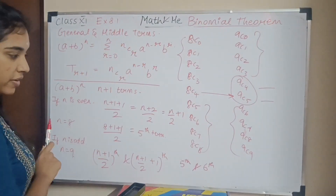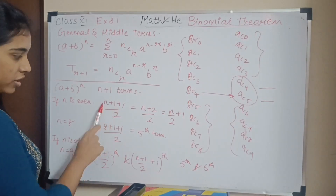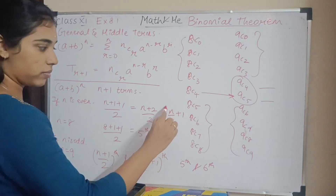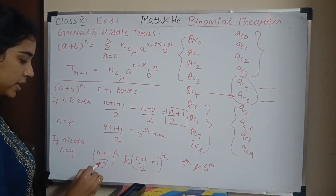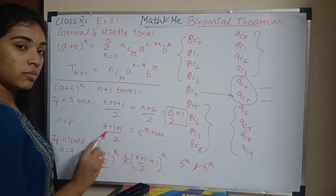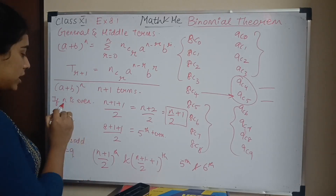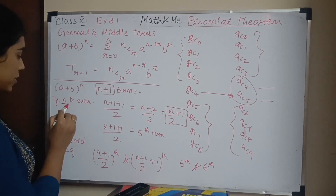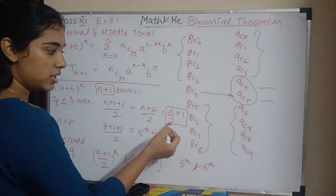To summarize: when n is even, the middle term is the (n/2 + 1)th term. When n is odd, the middle terms are the (n+1)/2 th term and the (n+1)/2 + 1 th term. Remember, n is the power and n+1 is the number of terms — don't confuse even and odd n.